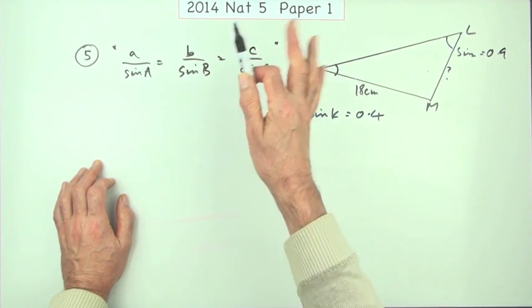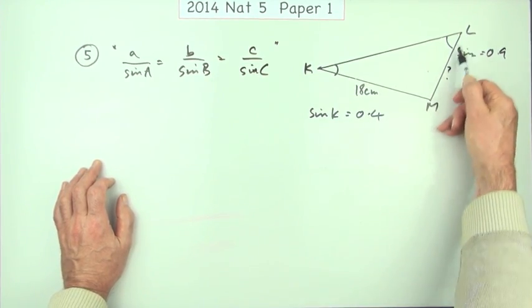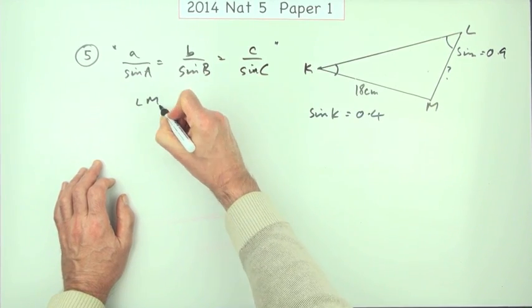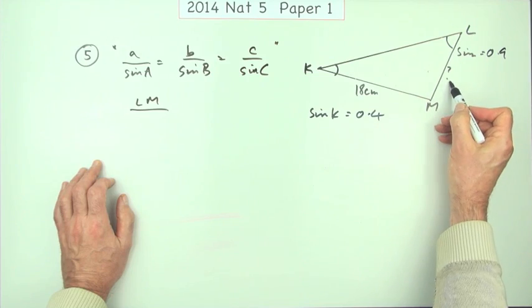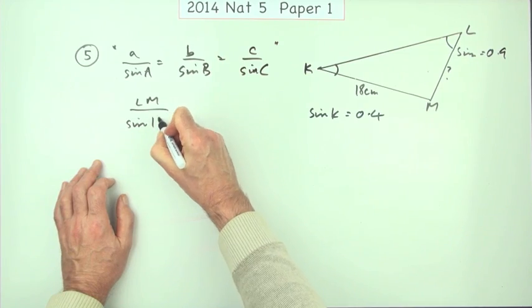So better than that, well, I would say anyway, better than that would just be jumped straight in with it. What do I want to work out? It's the line lm. What's the angle that produces lm? It's k, but it's the sine rule, so it's the sine of k.